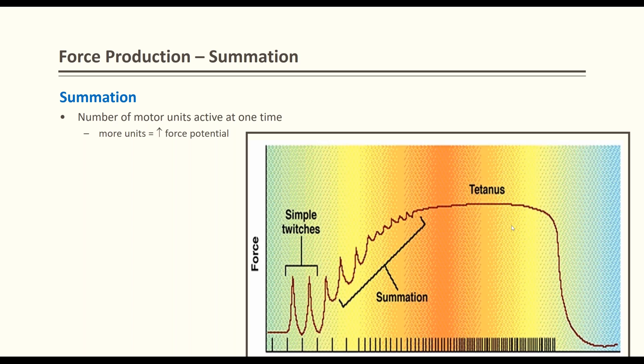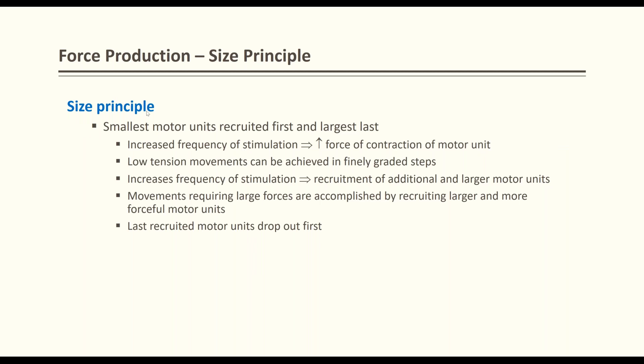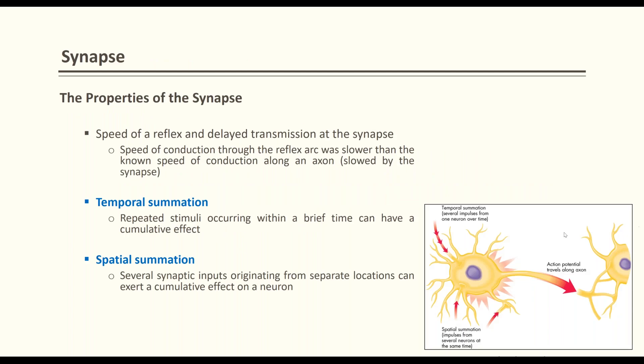The smallest motor units are recruited first and the largest are recruited last. Increasing stimulation frequency increases the force of contraction. Low-tension movement is achieved by finely graded steps, and increased frequency of stimulation causes recruitment of additional and larger motor units.